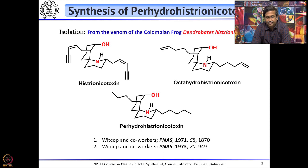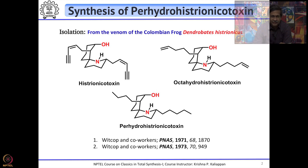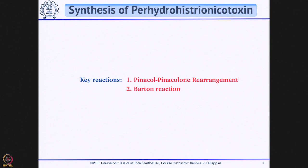This was isolated from the venom of a Colombian frog called Dendrobates histrionicus. It was isolated and reported back in 1971 and 1973 by Witkop and co-workers. In fact, they asked E.J. Corey to see whether this could be synthesized by his laboratory, and immediately Corey's group took up the total synthesis of this molecule and reported the first total synthesis of perhydroestrionicotoxin.